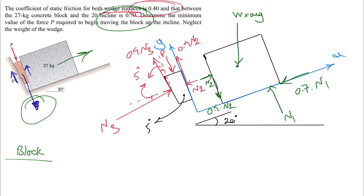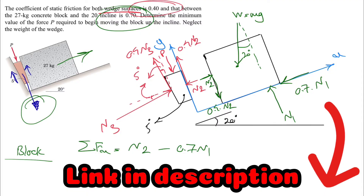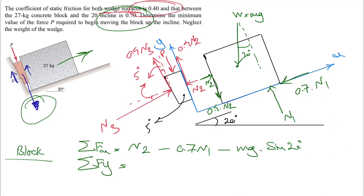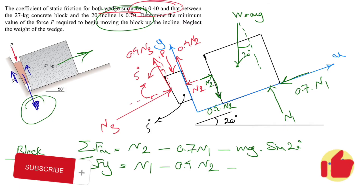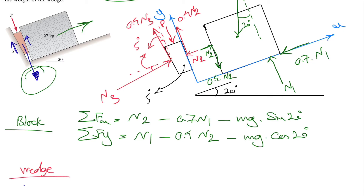We use equilibrium equations since we are at the point of impending motion. For the block's Fx equation: N2 minus 0.7 times N1 minus mg times sine of 20 degrees equals zero. For the block's Fy equation: N1 minus 0.4 times N2 minus mg times cosine of 20 degrees equals zero. There is a video in the channel — linked in the description — about a trick for finding the angle components.